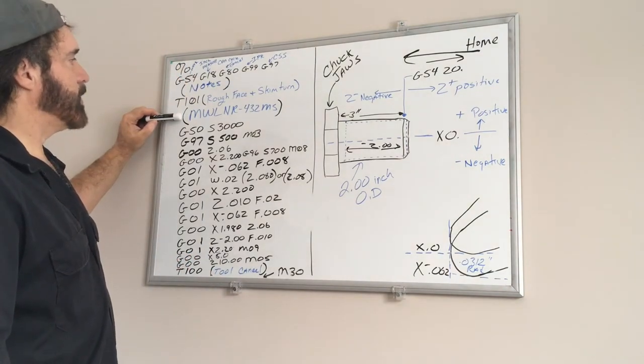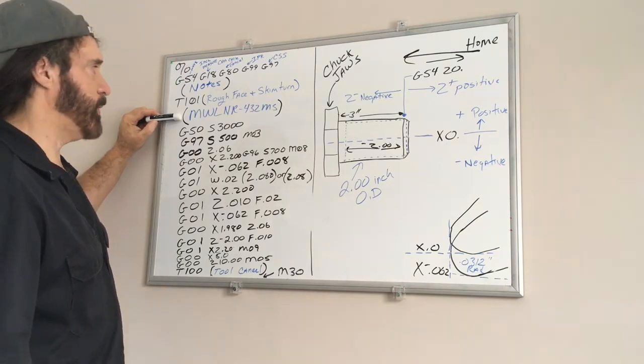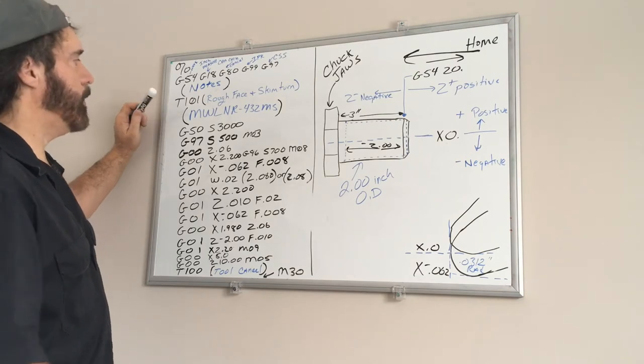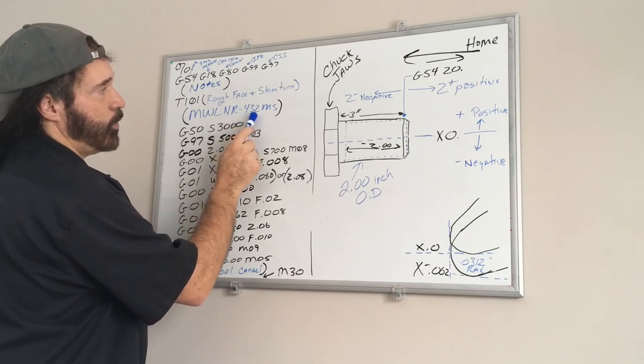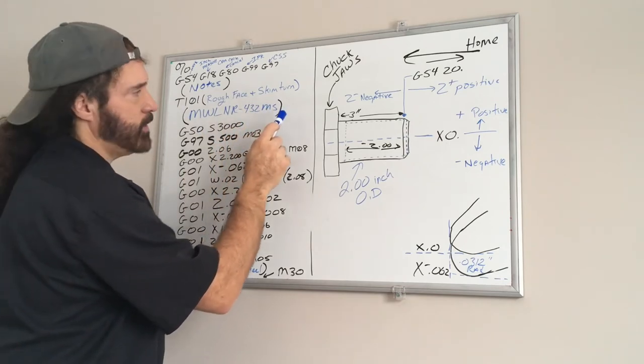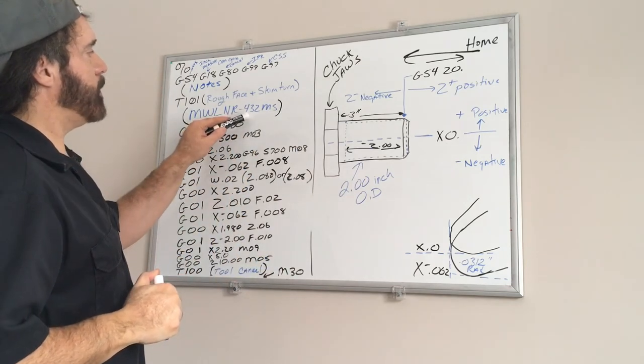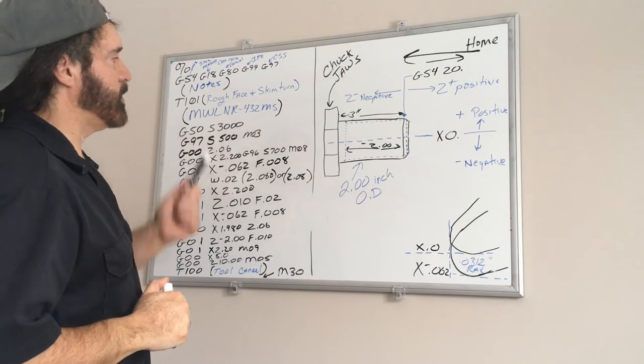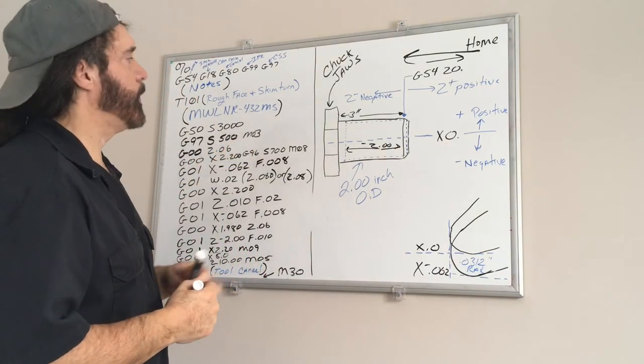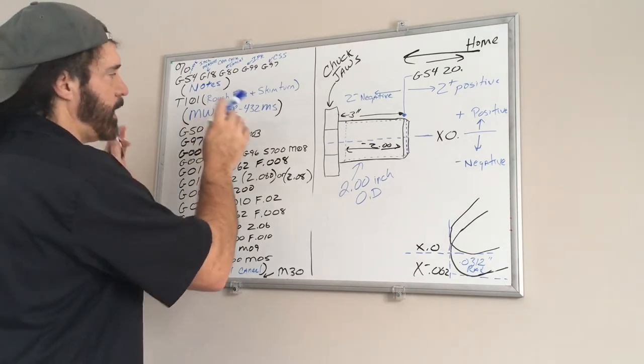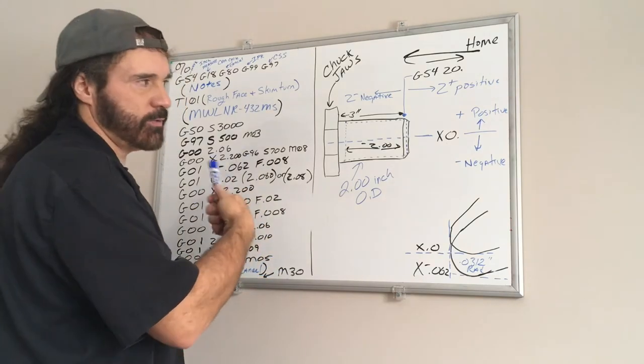So the next line underneath, I always put what tooling I'm using as far as the holder. In this example, we used to use like a NWL dash 432 MS that's in parentheses and a block. So that just told me this brand of tooling was an uncoated insert carbide insert. And that could vary. You can have so many different tools for roughing and facing. This is just for this example.